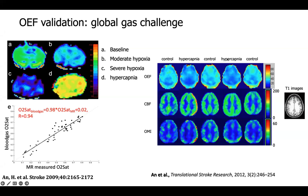In a hypercapnic study in normal subjects, five episodes were run by switching between room air and CO2-enriched gas. As expected during hypercapnia, CBF increased and OEF was reduced, while CMR02 or OMI remained roughly unchanged — consistent with the view that hypercapnia is isometabolic, meaning CBF increases and OEF decreases proportionally so that CMR02 stays the same.